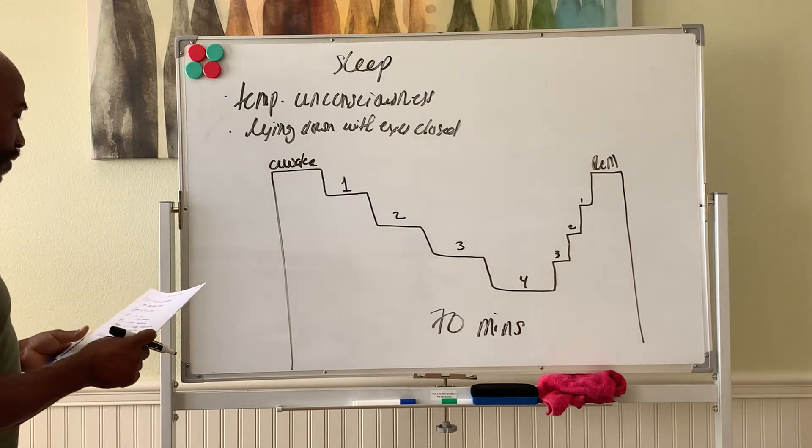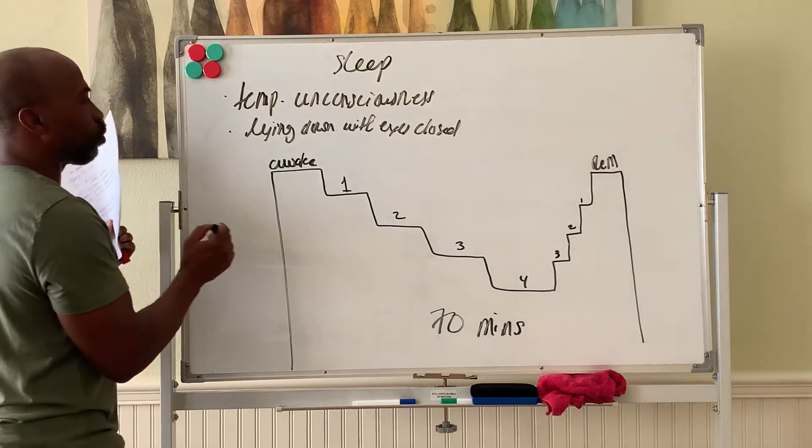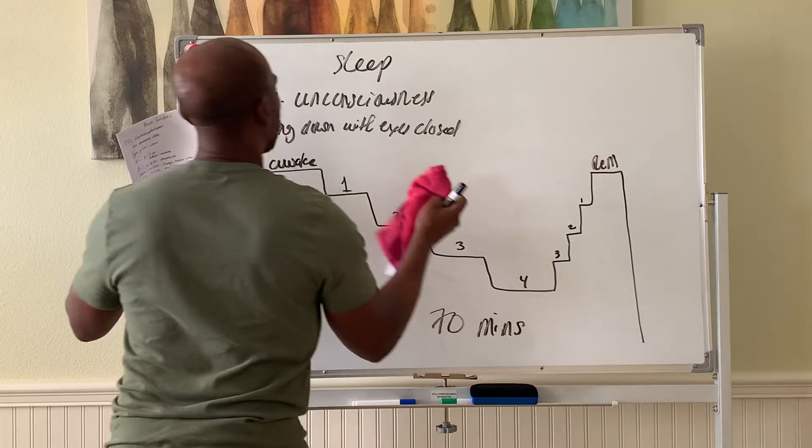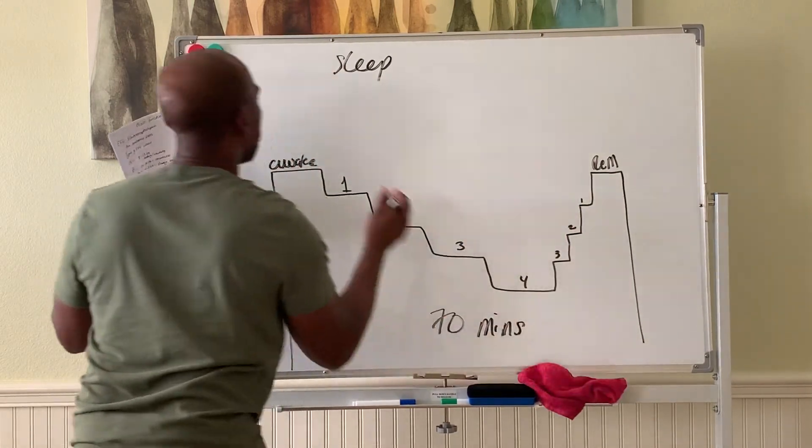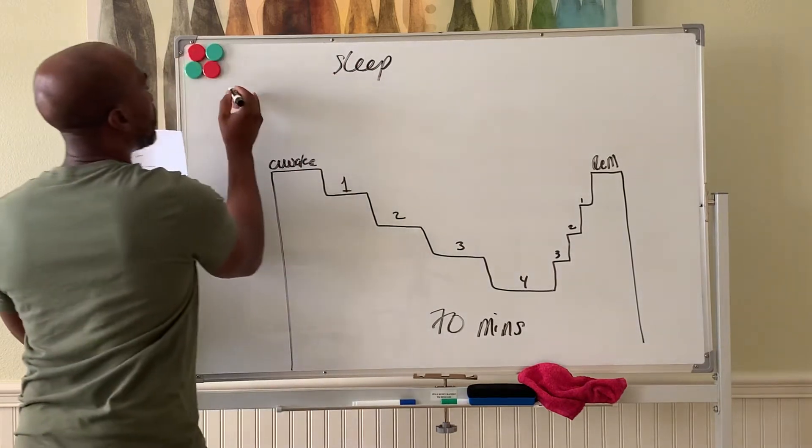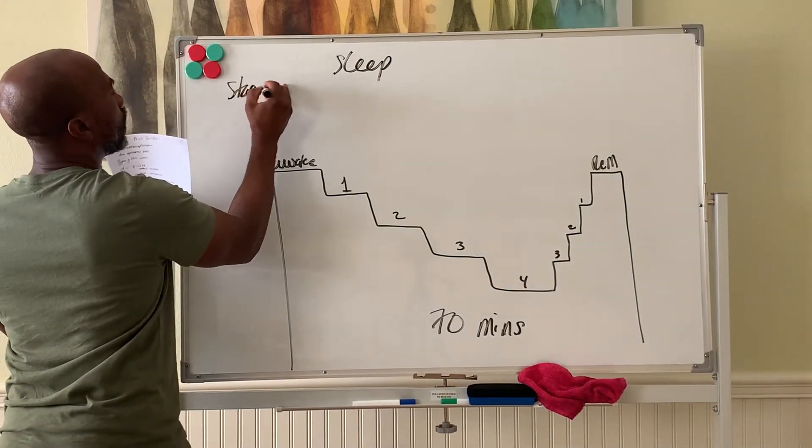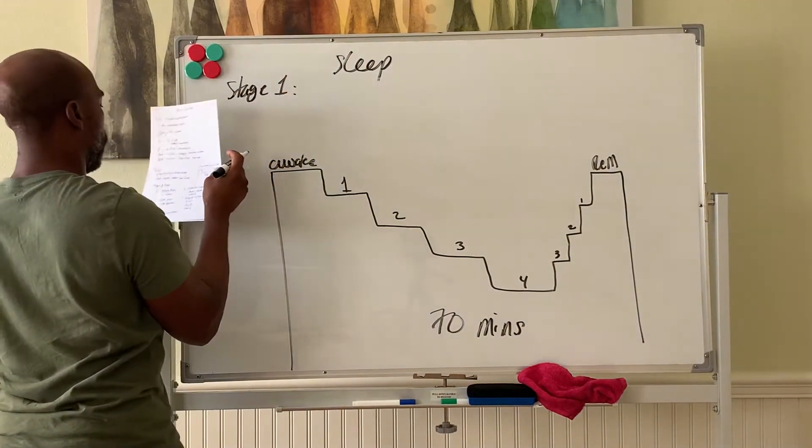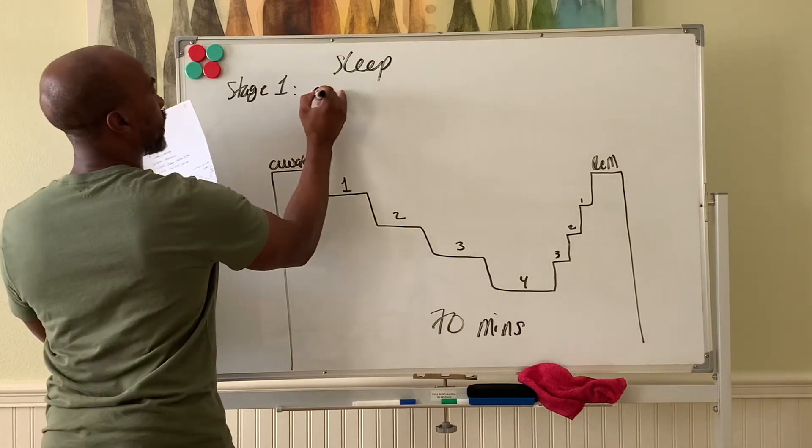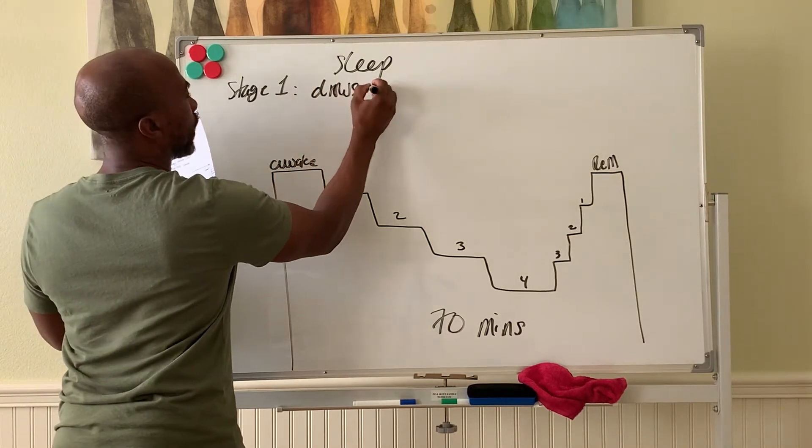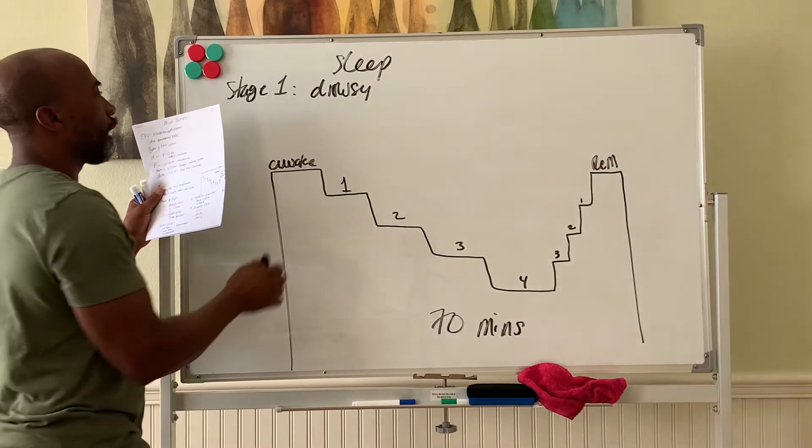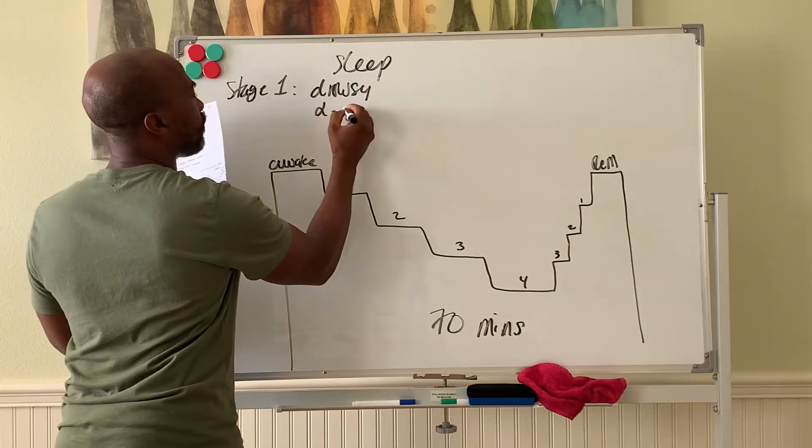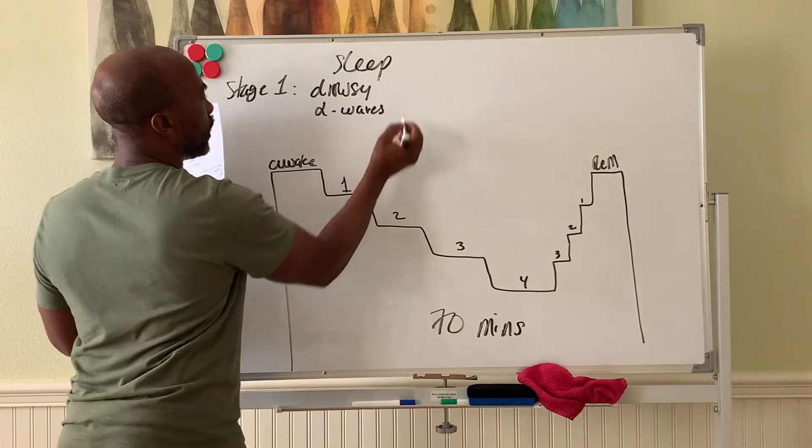Let's go through these different types of sleep. Stage one sleep is when you feel drowsy, you're kind of drifting off to sleep. You have a lot of alpha waves present in stage one sleep.